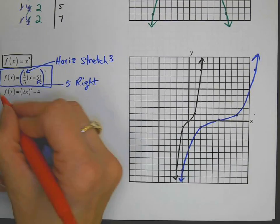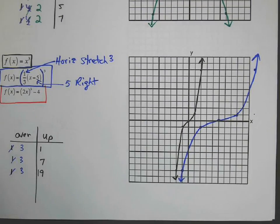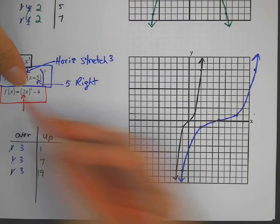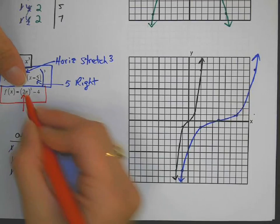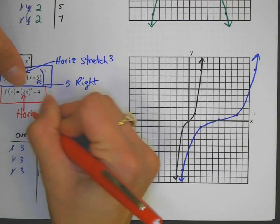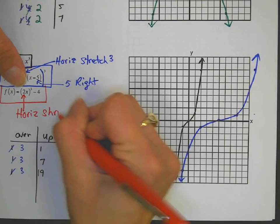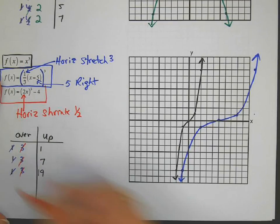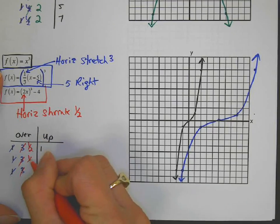Okay. This last one right here has two transformations. This two is inside getting cubed. If it's inside the function, that means horizontal. That's a two, so that's going to be a shrink, a shrink by a half. So let's make all the over numbers a half.